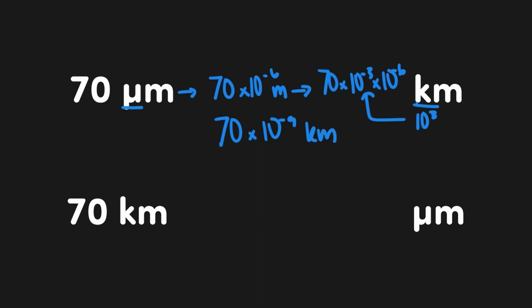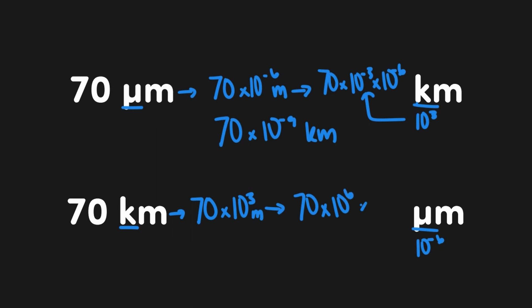Now let's do it in reverse: converting 70 kilometers into micrometers. First, we get rid of kilo and get down to base units: 70 times 10 to the 3 meters. Then we apply the inverse trick — we want micrometers, so we add micro (which is 10 to the negative 6) and multiply by the inverse, 10 to the 6. In total, we have 70 times 10 to the 3 times 10 to the 6, which condenses to 70 times 10 to the 9 micrometers.